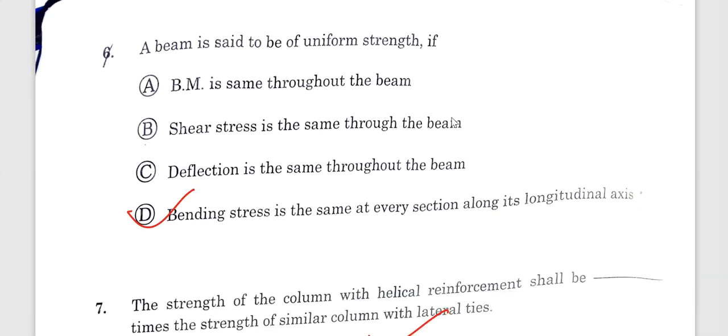A beam is said to be uniform. Bending is the same at every section along its longitudinal axis. Option D. Bending is the same. We will say that the beam is in uniform strength.